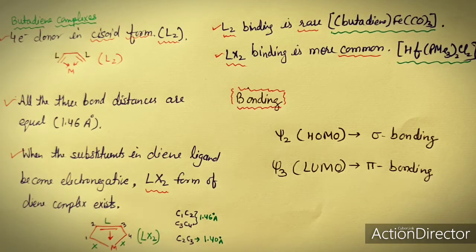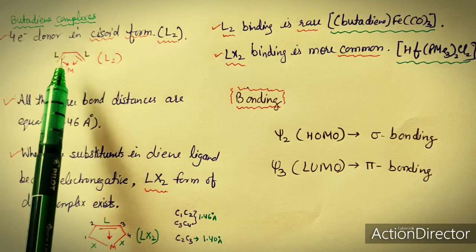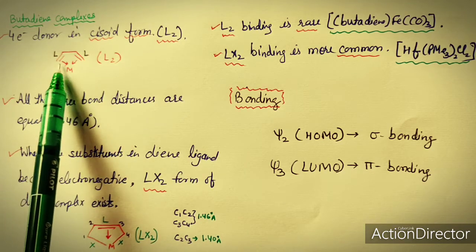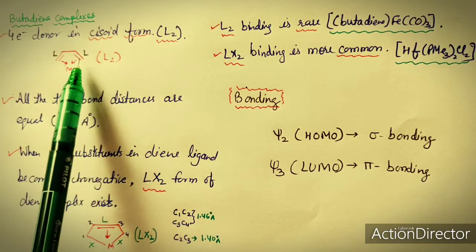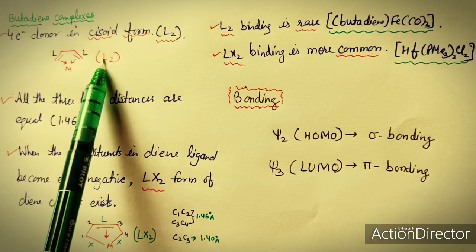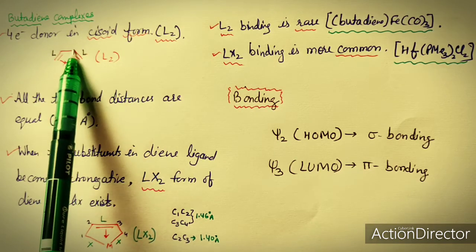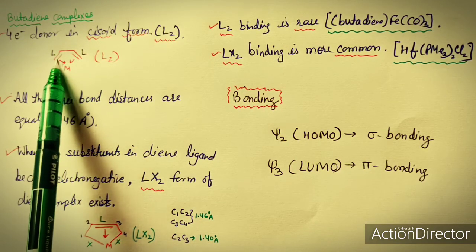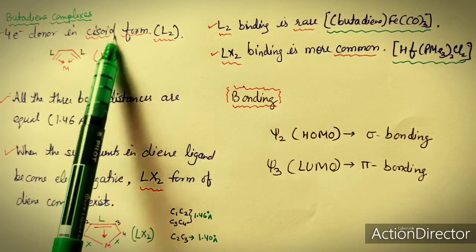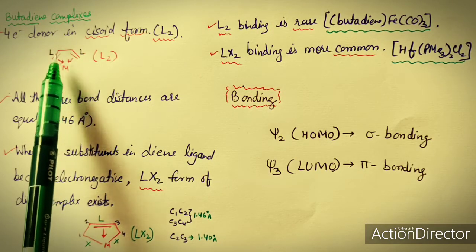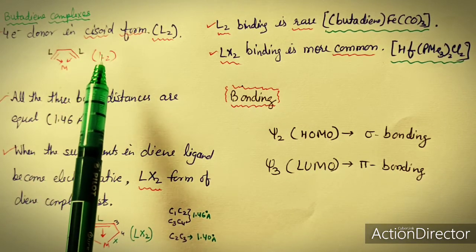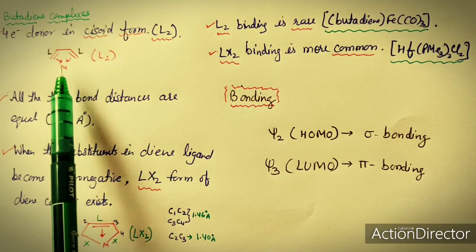First we study the butadiene complexes. This is 1,3-butadiene ligand complex, and this ligand is a four electron donor ligand in cisoid form. This is the cisoid form of 1,3-butadiene and it is also known as L2 type, because this double bond is a two electron donor and the other double bond is also a two electron donor — so total four electron donor. Cisoid means the two double bonds are on the same side of C2 and C3, so it forms an L2 type bond with the metal center.